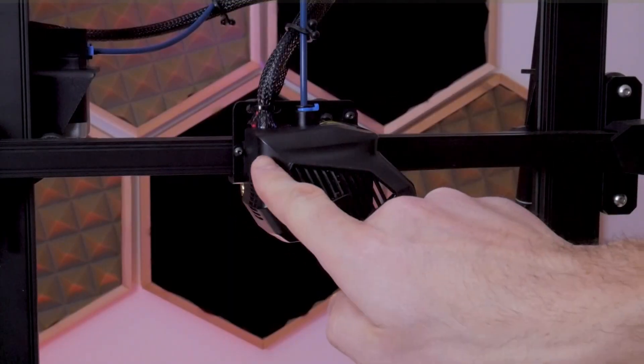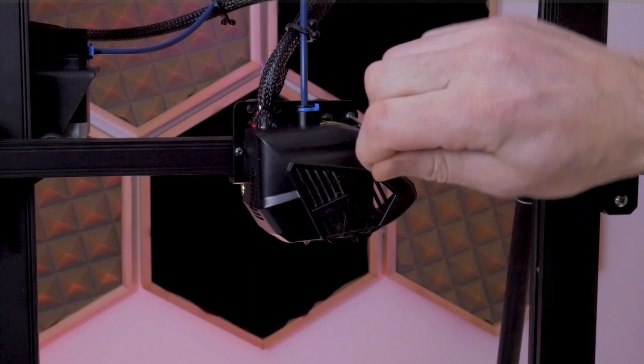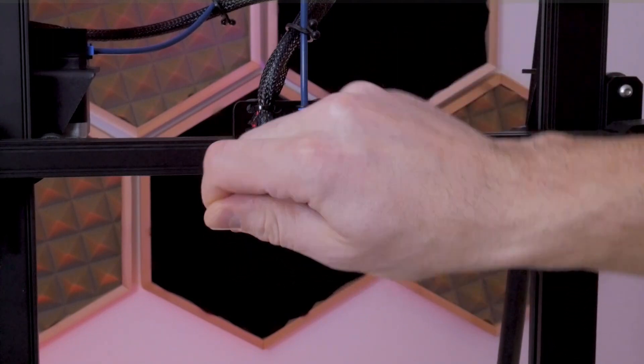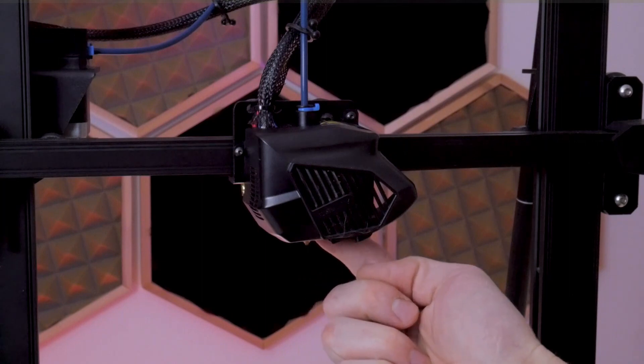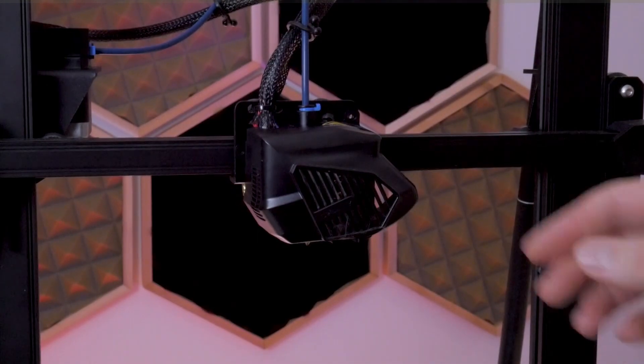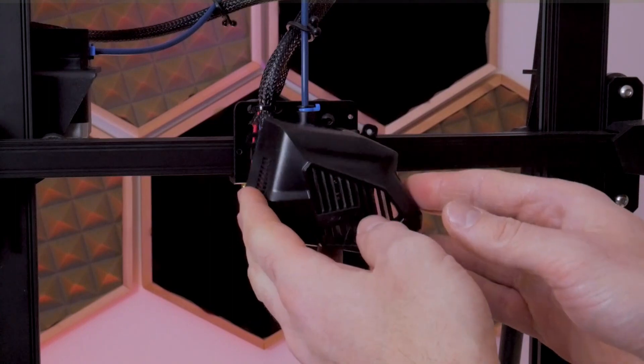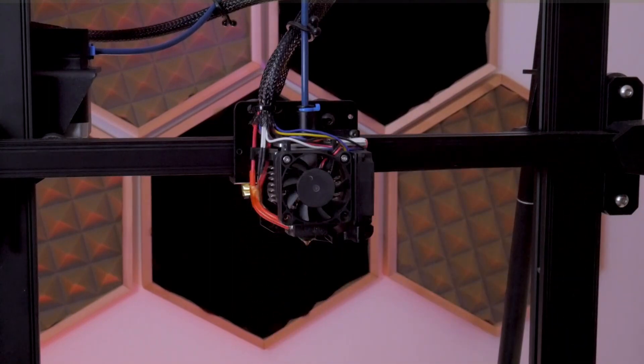The first thing we're going to do is remove the three M3 button head cap screws holding on the hot end cover. There are two in the front and one in the back. You can easily find the one in the back by looking from the back of the machine, and once those are off, the cover will just pop off.